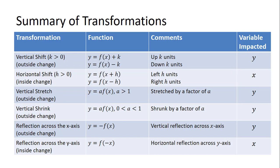We've learned about vertical shifts that come about by adding or subtracting a number from the outside of a function. If we add a number k, that moves the graph up k units; if we subtract k, the graph goes down k units. We've also learned about horizontal shifts, which arise from a number added or subtracted from the inside of a function. Adding a positive number to x shifts the graph left h units, while subtracting h from the input shifts the graph right h units.